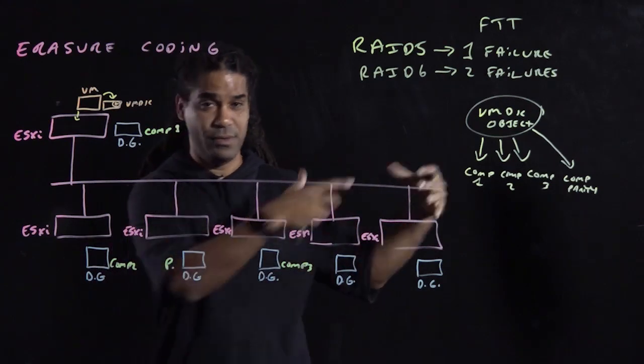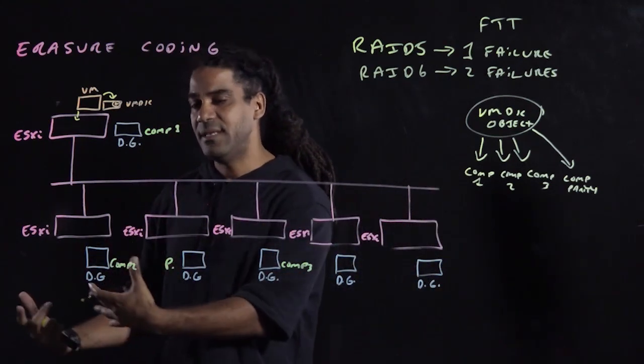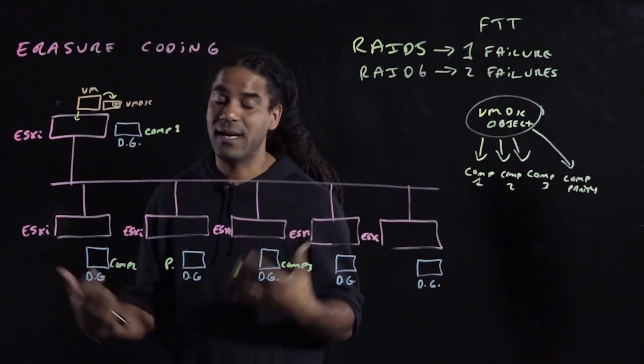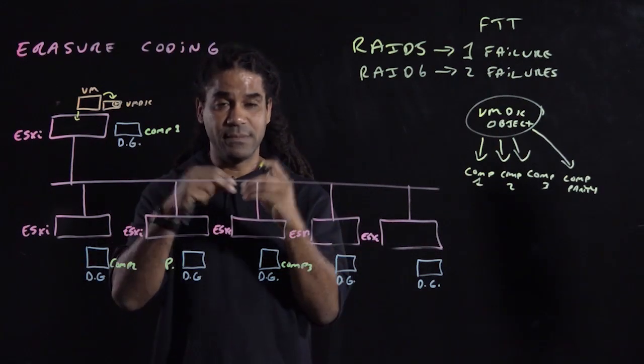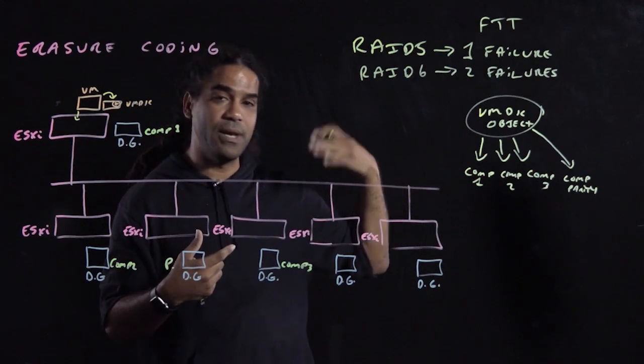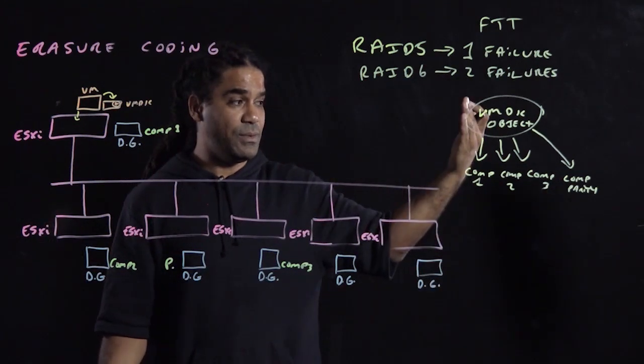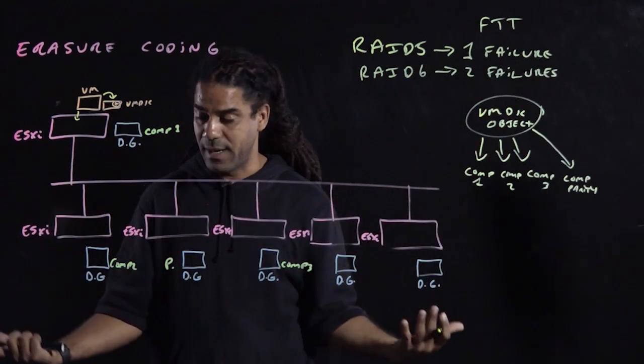So it sends two, one to the component where the blocks are, and one to the parity disk, so the parity host can calculate the parity for that particular block. If the write has blocks in different components, then the write will go to those components. And that's how the RAID 5 works in the vSAN environment.